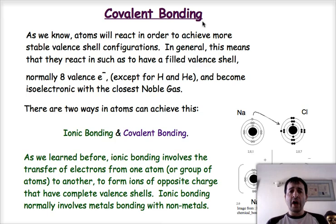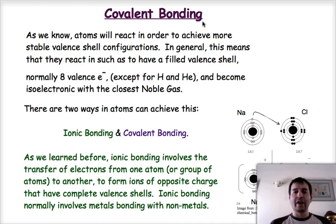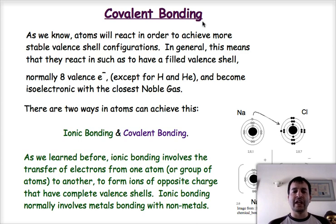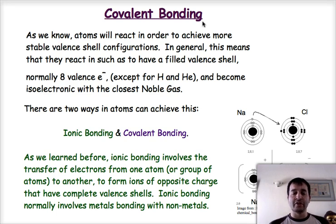As you may or may not recall, when atoms react, they react in such a way that they want to achieve a more stable configuration, and normally that means they want to fill their valence shell to eight valence electrons. There are a couple of exceptions — hydrogen and helium being the notable ones, in which they only take two electrons in their valence shell because their valence shell is the first energy level that can only hold two electrons. We normally don't talk too much about helium because it's a noble gas and it doesn't react, so the main exception we're going to be looking at will be hydrogen. Atoms react in such a way as to become isoelectronic to the closest noble gas.